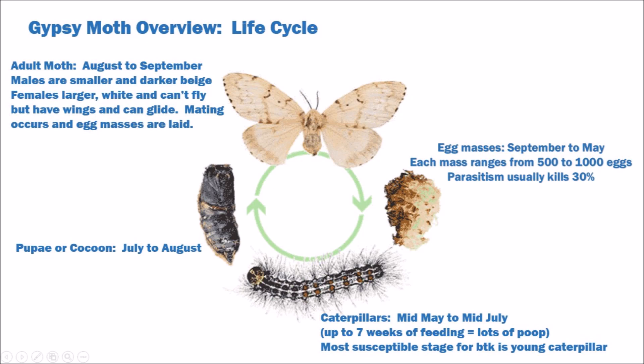Caterpillars begin to pupate or cocoon in late July to August and emerge a few weeks later as moths. Male moths are smaller and a darker beige in color and can fly, compared to the larger flightless female moths, which are whitish in color. Moths do not cause any damage to trees since their main goal at this point is to mate, lay eggs and die. There is really no control option at the moth stage either.